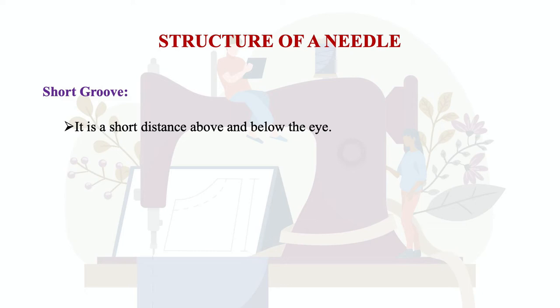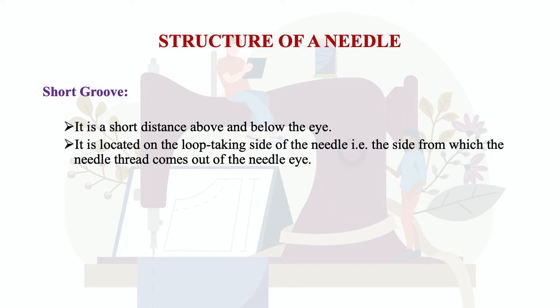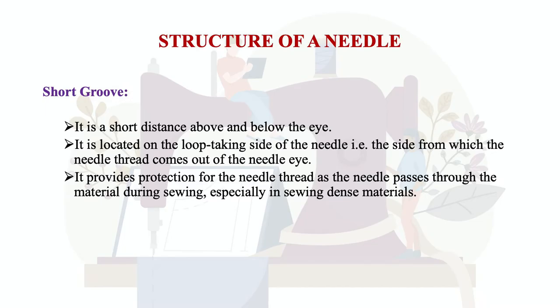The short groove is a short channel above and below the eye, located on the loop-tacking side of the needle — the side from which the needle thread exits the eye. It provides protection for the needle thread as the needle passes through the material during sewing, especially when sewing dense or heavy fabrics, helping the needle pass easily.